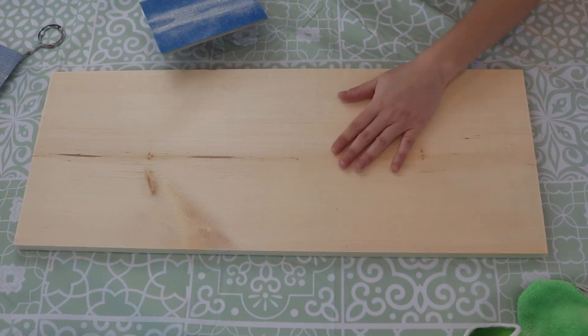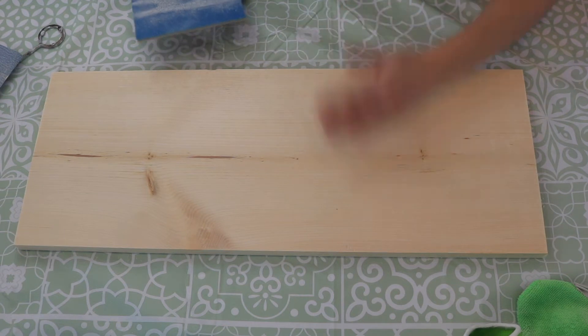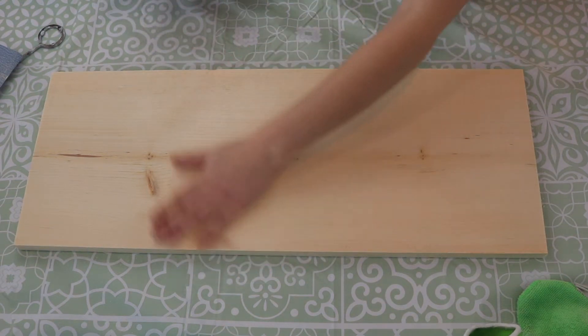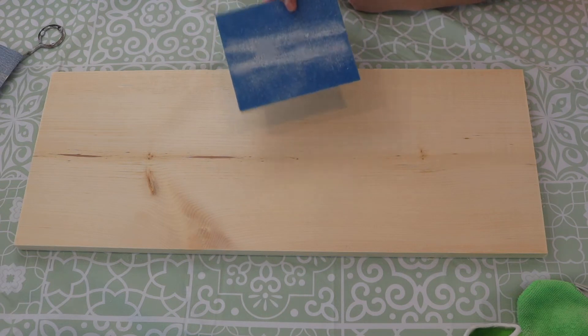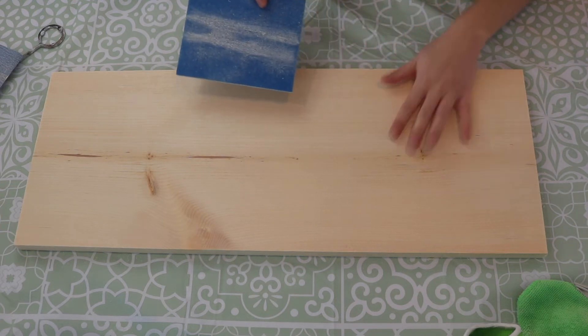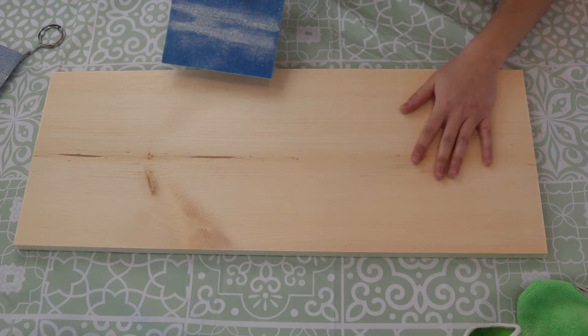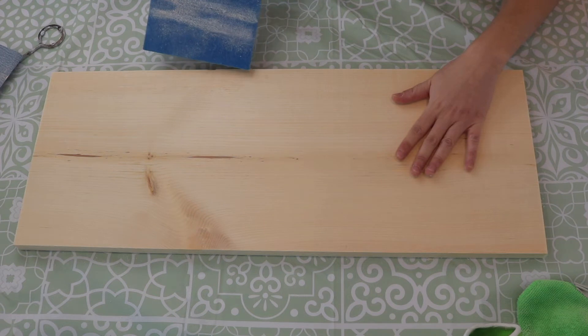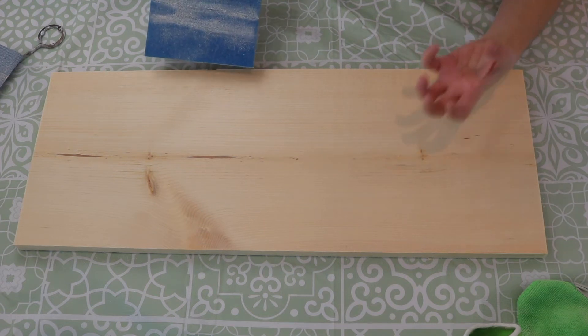You could have stopped at 150 and started your staining and wood conditioning process, but I always like to go to 220 for an extra smooth finish. You never want to go higher than 220 when staining wood, because it will buff out the pores and make it hard for the stain to adhere.